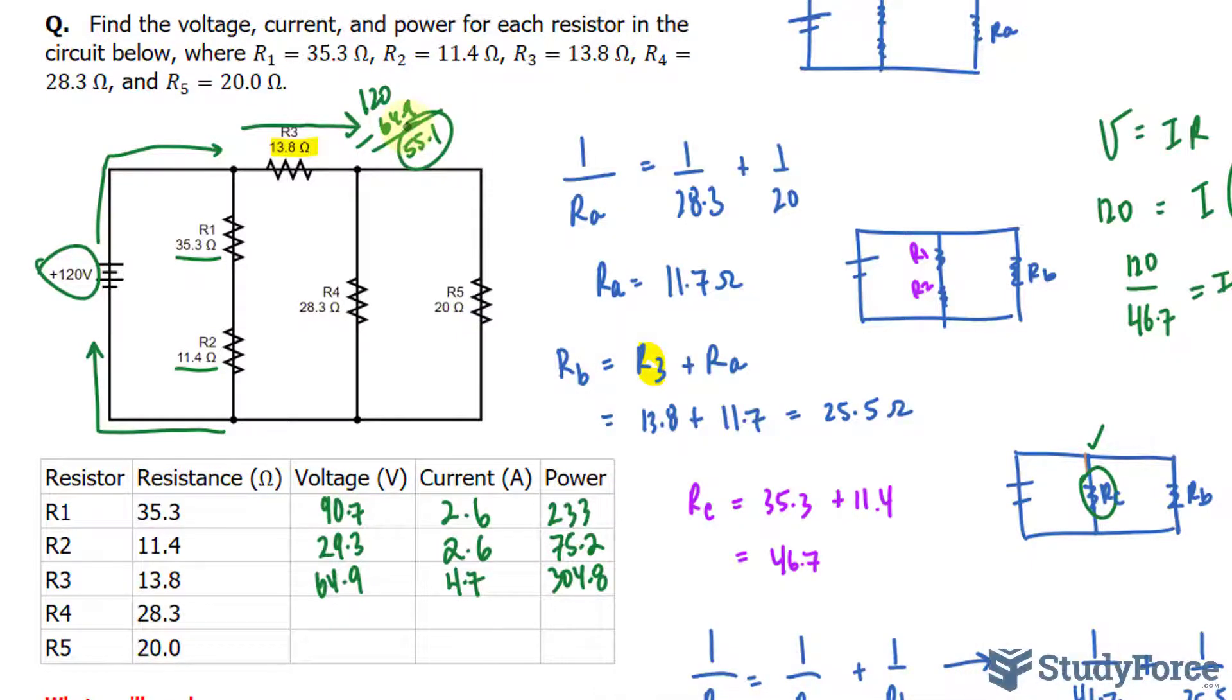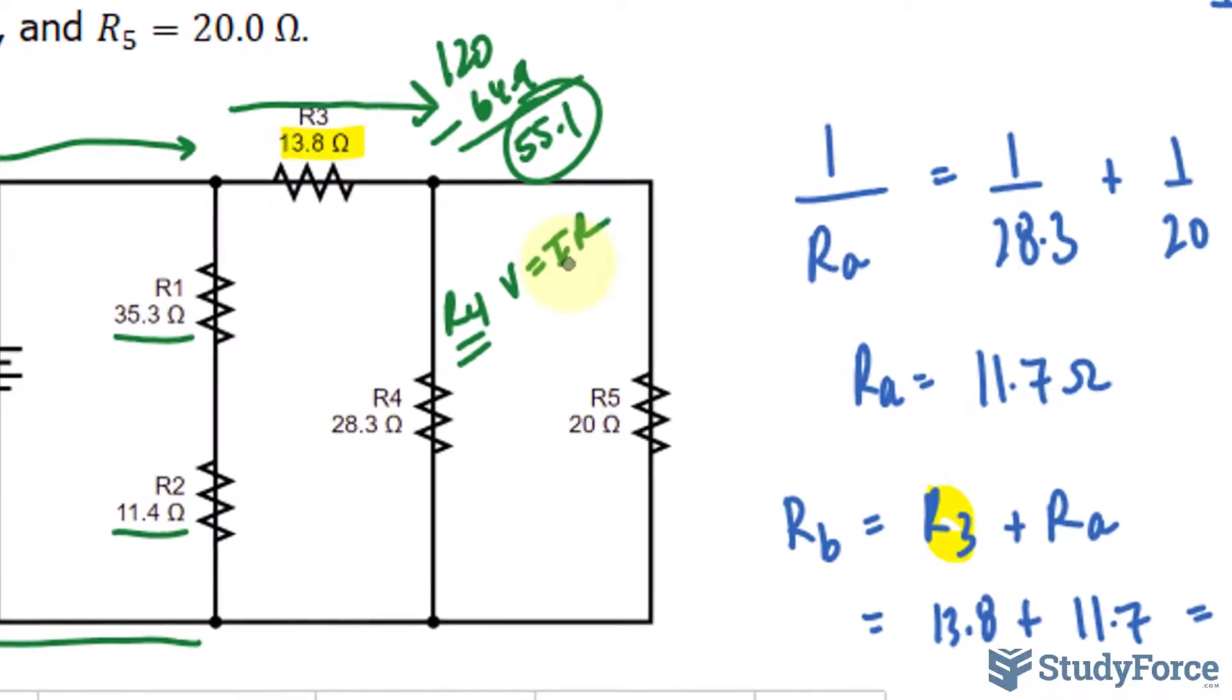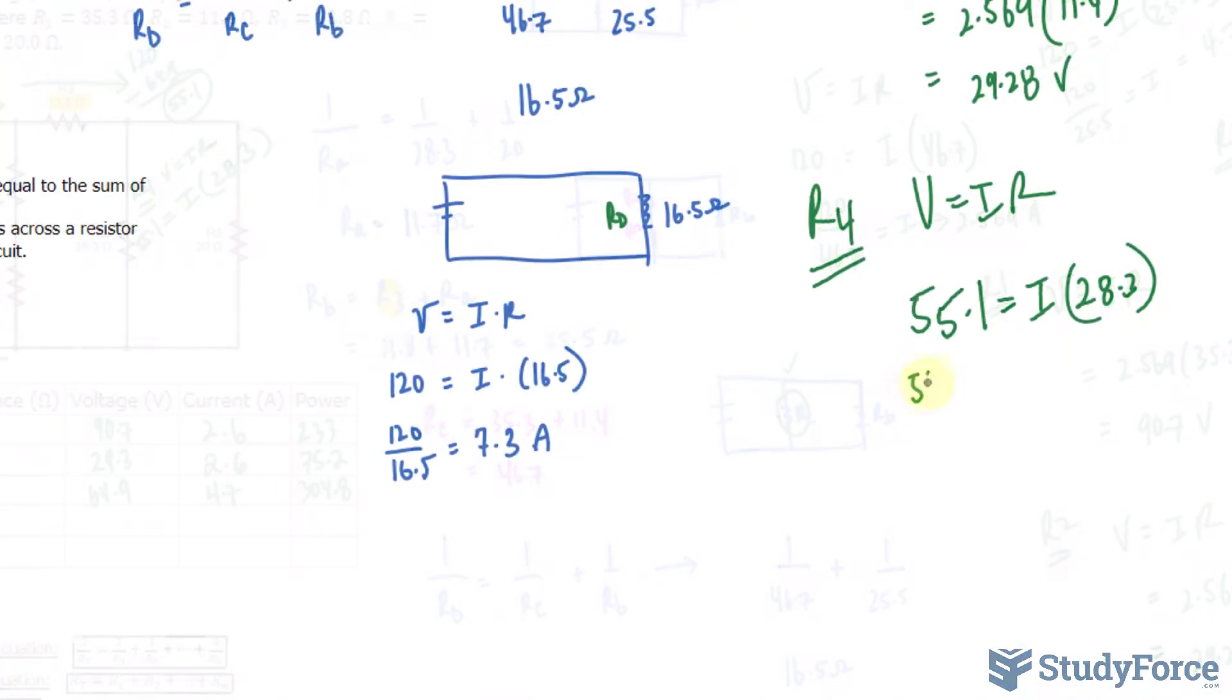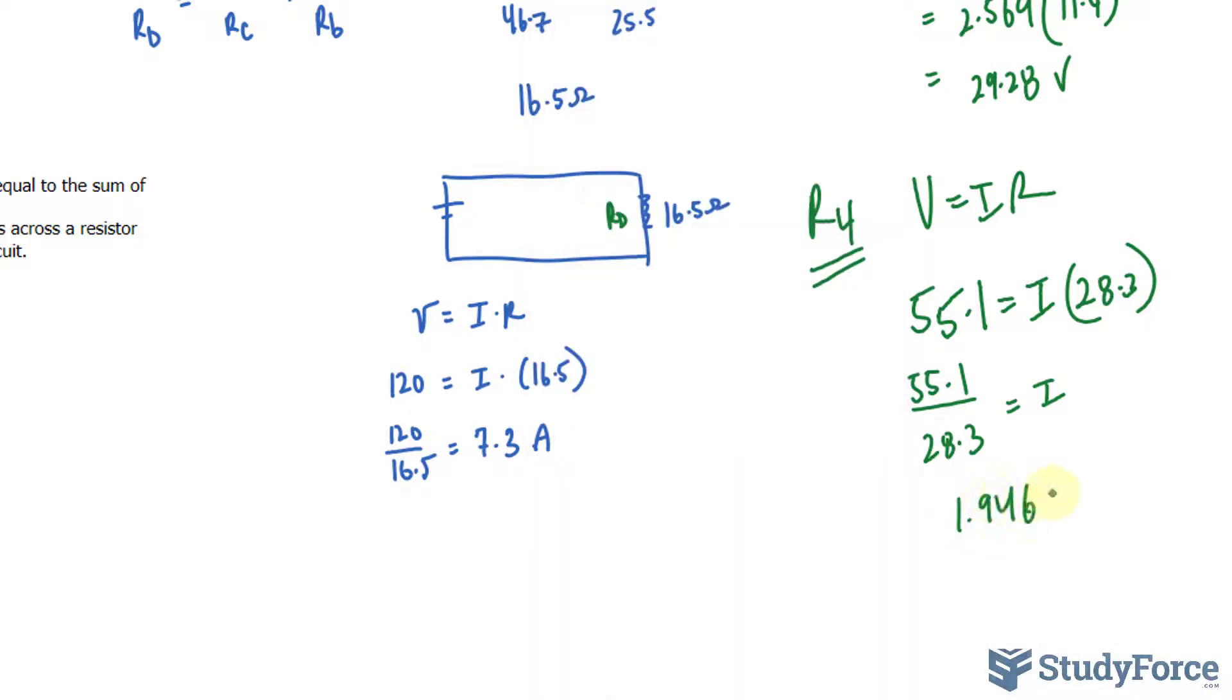That's the voltage we'll be using moving forward. To calculate the current at R4, using Ohm's law V equals IR, we use the resistance for R4 being 28.3. We don't know the current, but the voltage is 55.1. Dividing both sides by 28.3, we end up with a current of 1.946, which we'll round to 1.95.